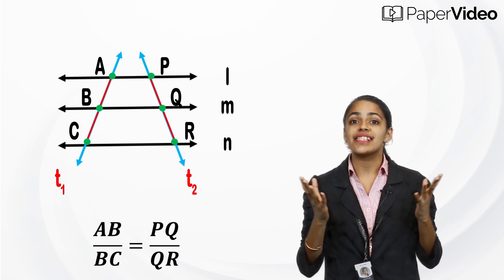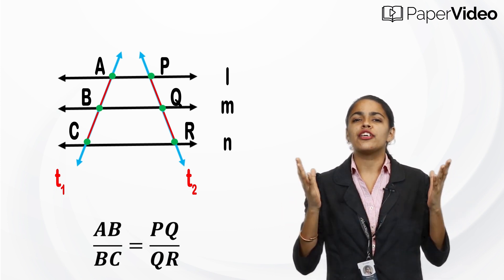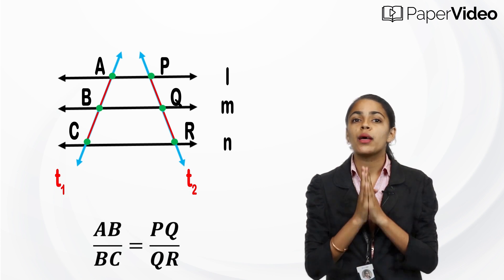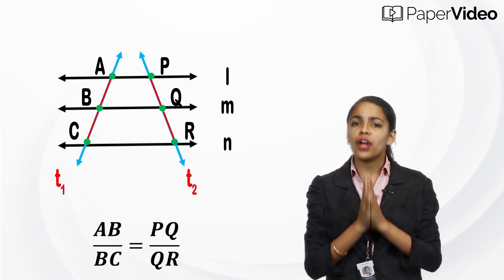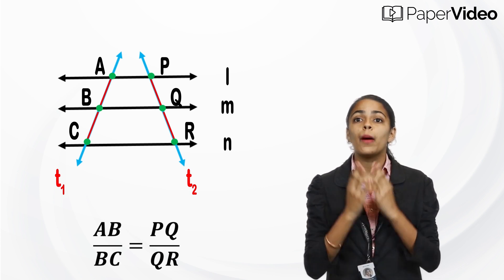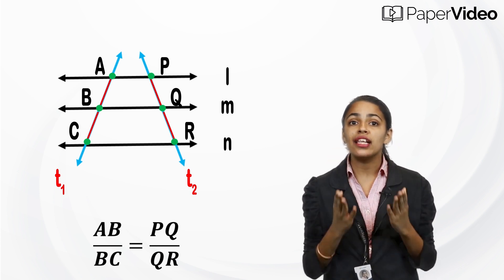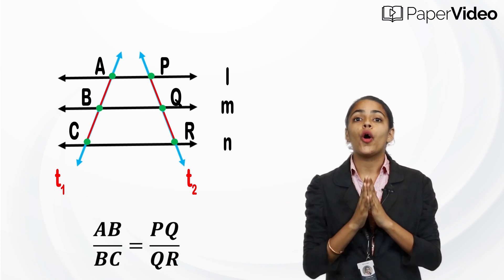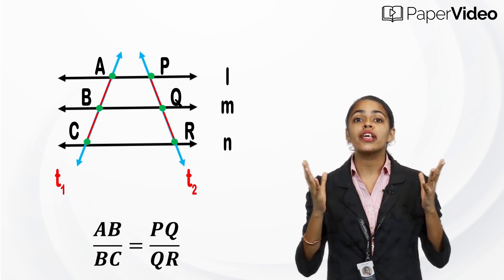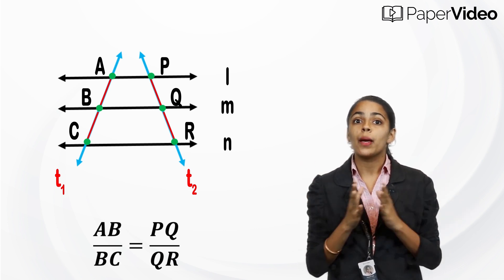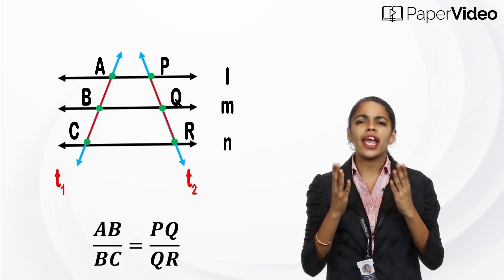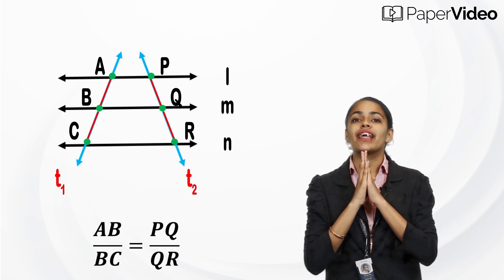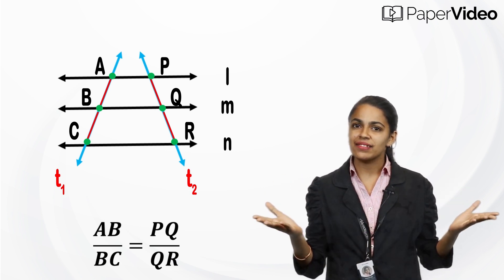In other words, the ratio of the intercepts made on a transversal by three parallel lines is equal to the ratio of the corresponding intercepts made on any other transversal by the same parallel lines.